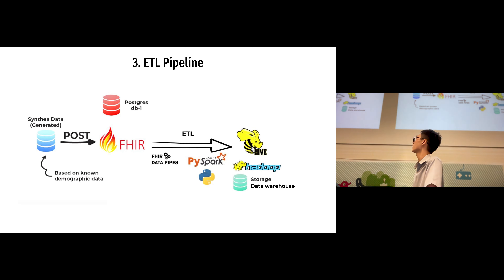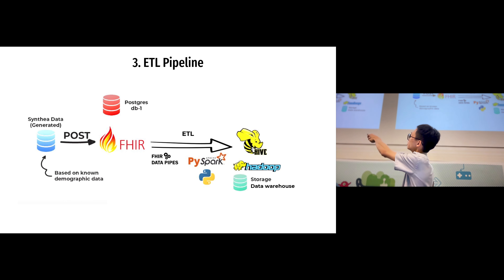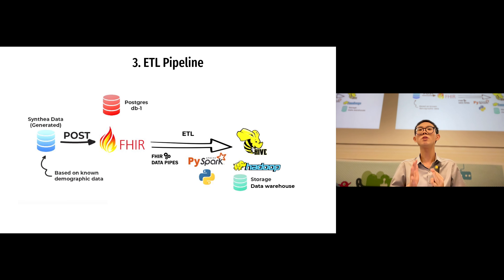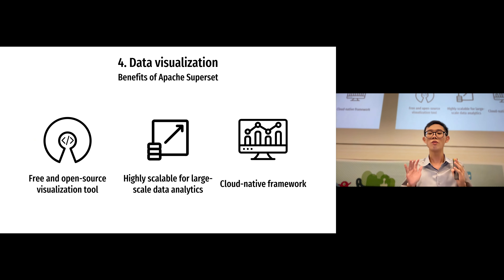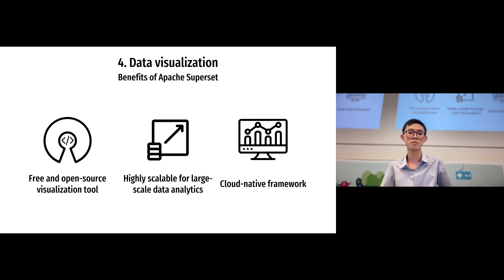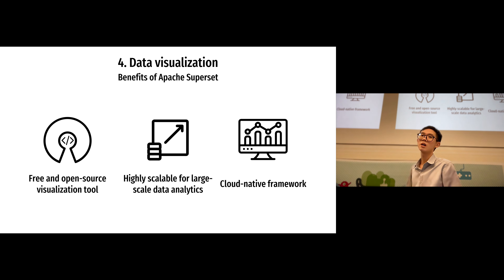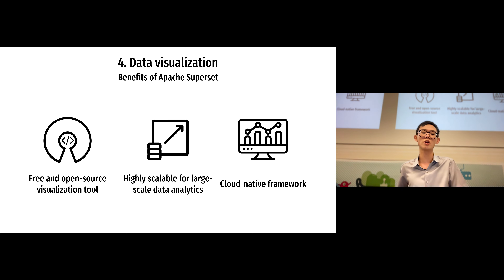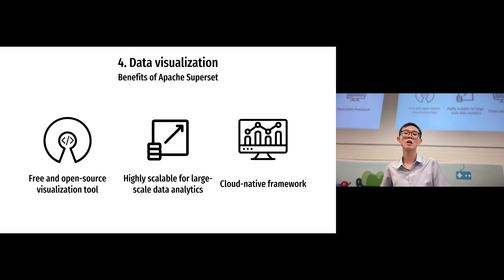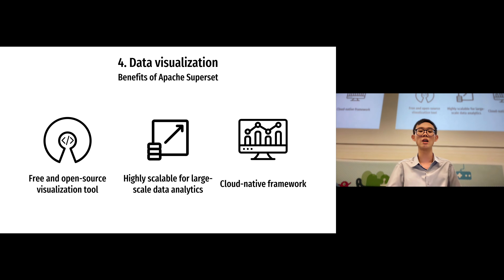At this point in our pipeline, we have taken the FHIR resources, performed ETL on them, and the data is loaded into the Hive data warehouse — ready for visualization and predictive analytics. For data visualization, I have chosen to use Apache Superset. It is a free and open-source visualization tool used by the biggest companies in the world like Tesla and OpenTable. It is highly scalable and uses a cloud-native framework, meaning it is easy to deploy on different cloud services.